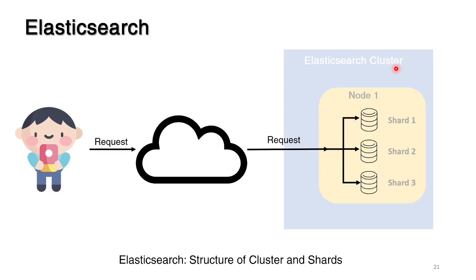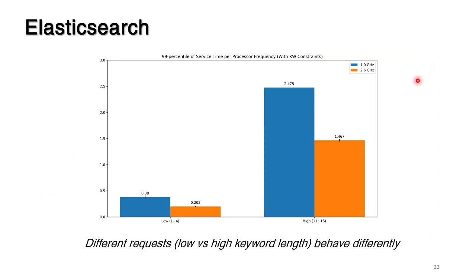We know that different requests will behave differently. A request with one keyword will be way faster to answer than a very large one with 11 to 16 keywords. Not only this, but this graph shows that different frequencies make a difference in the service timing, because there are CPU calculations done here that are significant enough to make everything slower or faster. Running at 2.6 GHz is faster than running at 1.0 GHz. High keyword requests are also slower than low ones — different requests behave differently.